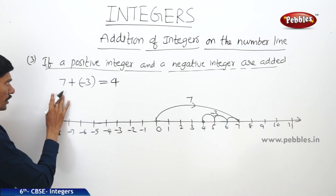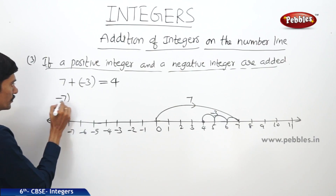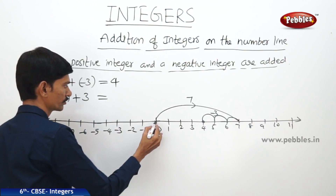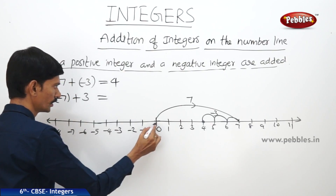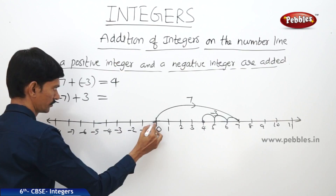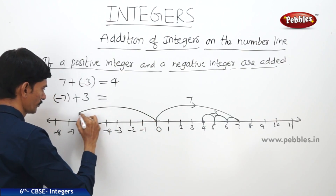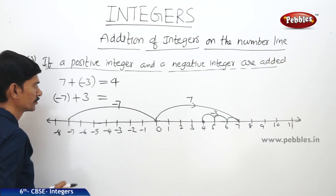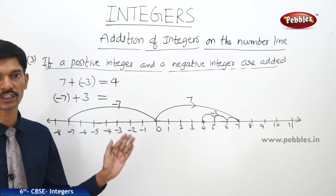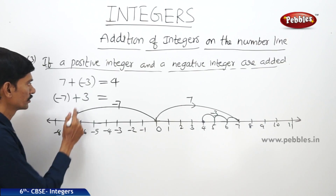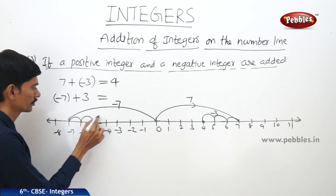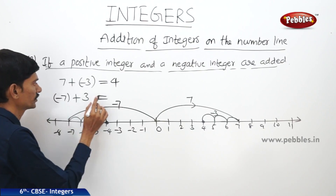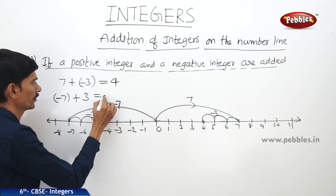Now if a negative integer and a positive integer are given — so if (−7) + 3 is given — then minus 7 means first you have to move to the left from 0 to minus 7. A positive integer is added, so when the positive integer is added we have to move to the right. From minus 7 we move 3 steps to the right — 1, 2, 3 — so then we are at minus 4. Therefore, (−7) + 3 = −4.